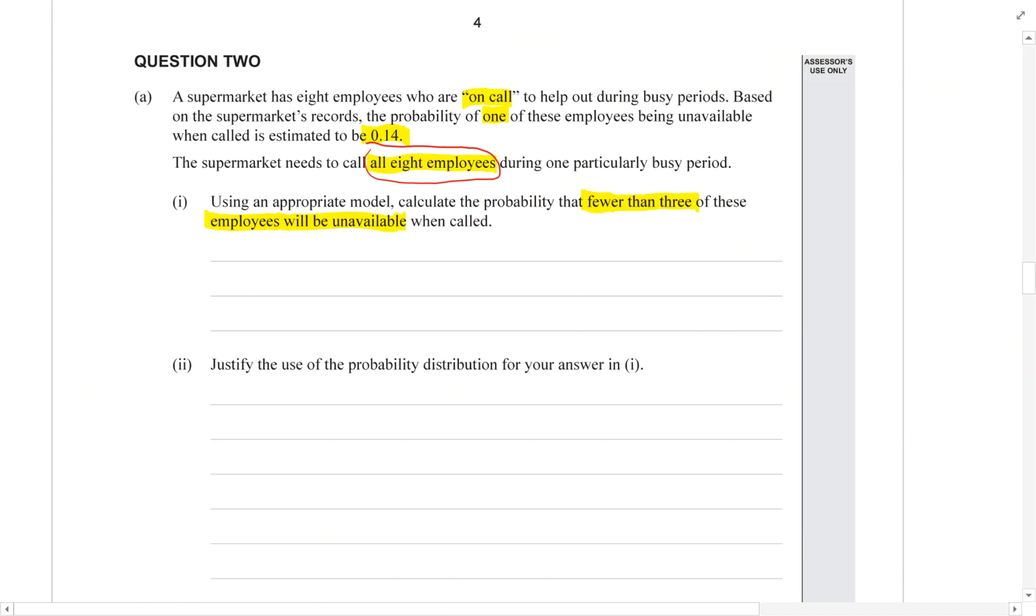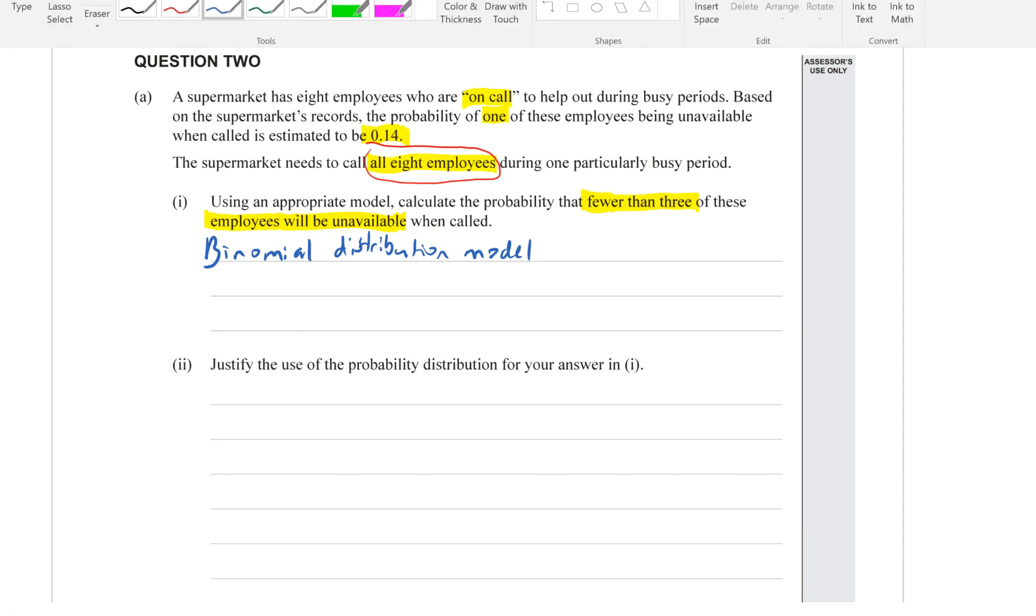We need to start with a binomial model. I'm going to write that down first. Always start by writing down the distribution you're going to use. Binomial. And then you need to write down its parameters.